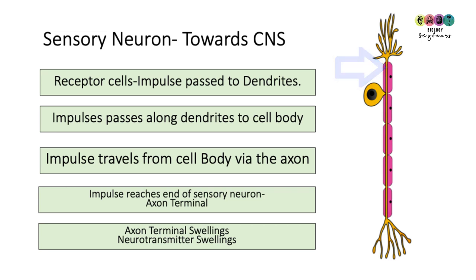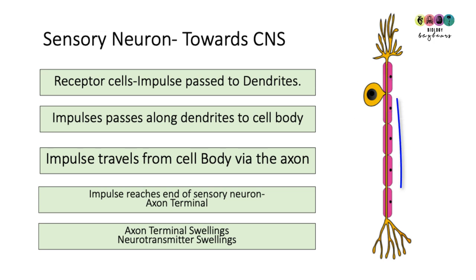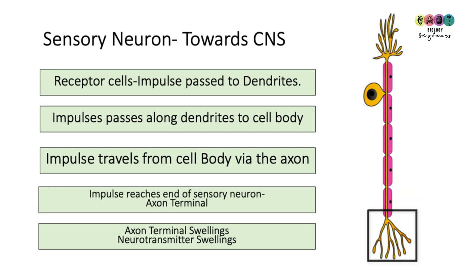The cell body of the sensory neuron contains the nucleus and controls this cell. From the cell body, the electrical impulse gets passed down one long fibre known as an axon towards the axon terminal area.